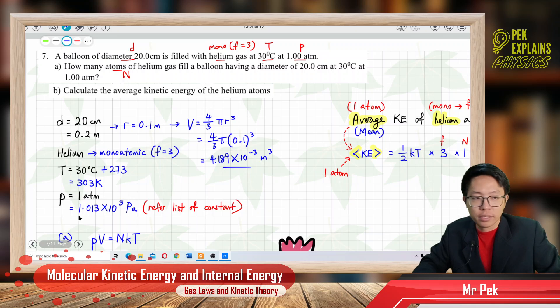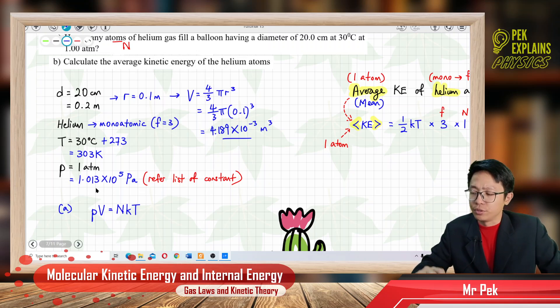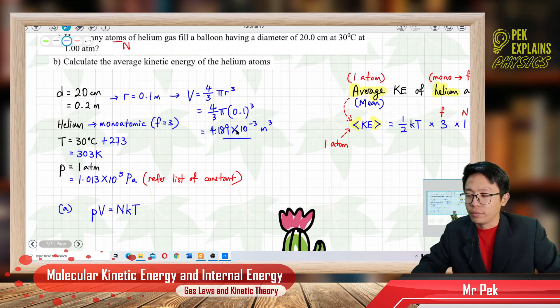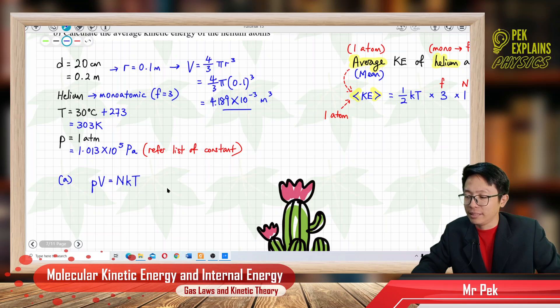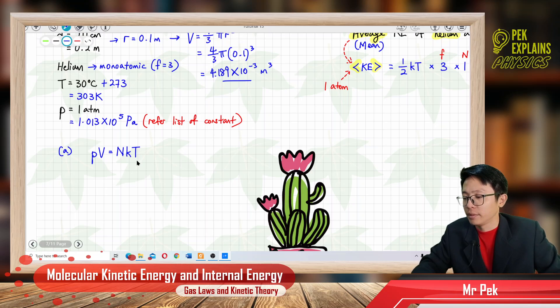One atmospheric pressure is actually 1.013 exponent 5 Pascal. Where to get this value? Refer your list of constant provided in exam. Make sure you use the same value as the list of constant. So all in SI unit already: meter cube, Kelvin, Pascal. Next, we need to find the number of atoms, so we use PV equal to NKT because we want to find N, big N. So we use NKT instead of NRT.